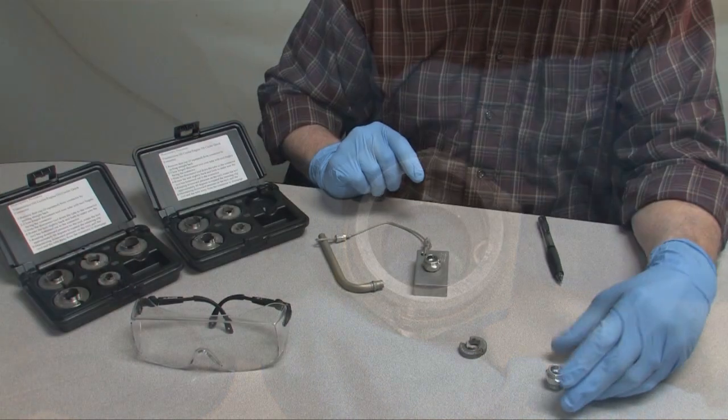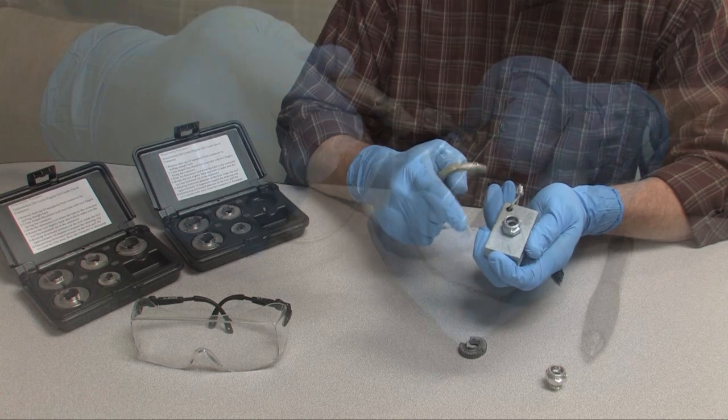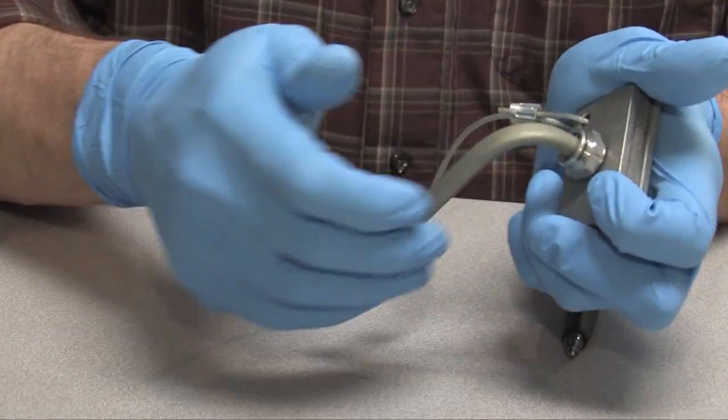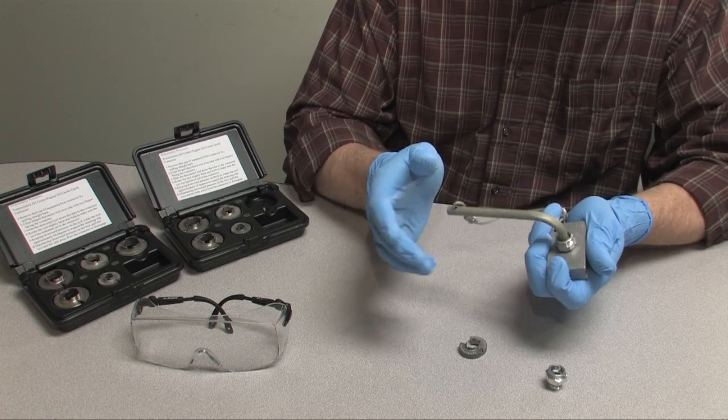Now watch what happens when I seat the end of an actual transmission line inside an actual Jiffy-Tite fitting in this demonstration block. This fitting isn't coming out, no matter how hard I pull. There's no threading it out, because there's no thread in there.